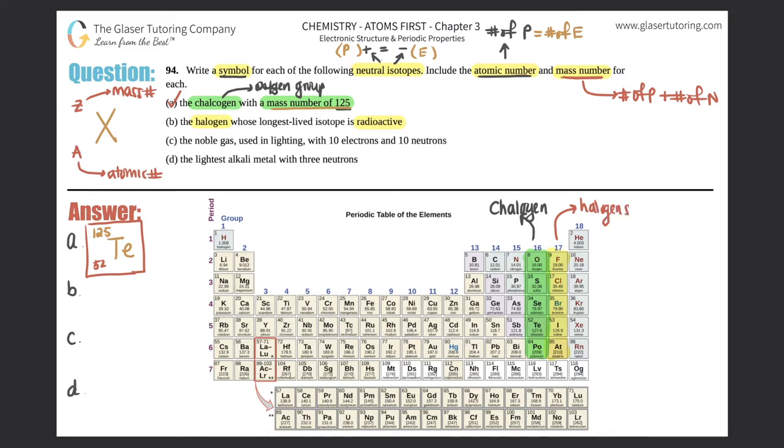They want to know the longest-lived isotope that is radioactive. They didn't really give us much, but we can tell that as you go down a group, these elements become more and more unstable. The more unstable an element is, the better chance that it will become radioactive or very disruptive. Uranium is super radioactive. Uranium is all the way down here, so which one do you think it would be? It would definitely be the one that's all the way at the bottom, so it would be astatine.